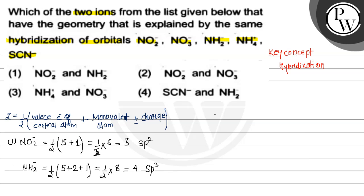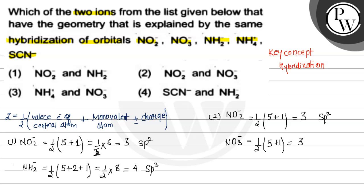Now, the second option is NO₂⁻: calculating hybridization — half the central atom's valence electrons, that is 5, plus no monovalent atom, and there is a negative charge so we add 1. That equals 3, so NO₂⁻ hybridization is SP2. The second species is NO₃⁻: half valence electrons of central atom plus 1 for the negative charge, no monovalent atom — it is also 3, so hybridization is SP2.